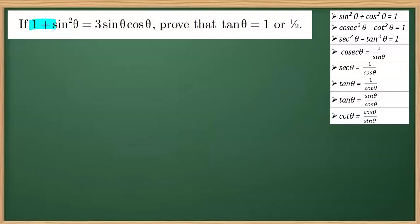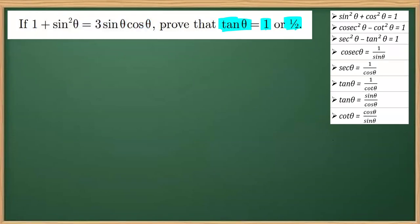The question here is: given a trigonometric equation 1 plus sin²θ equals 3sinθcosθ, we have to prove that tanθ is equal to 1 or equal to half. What we can observe is that the information given is in sine and cos, and we have to obtain tan.